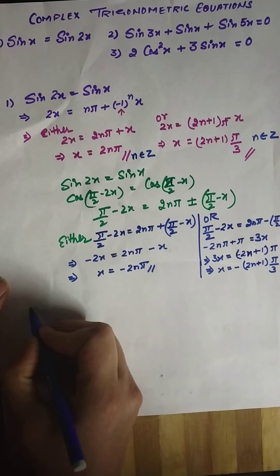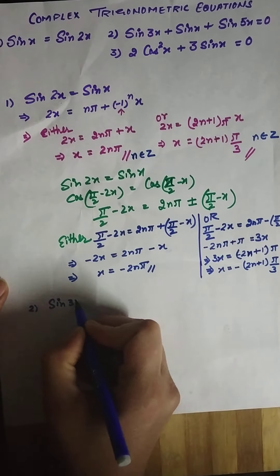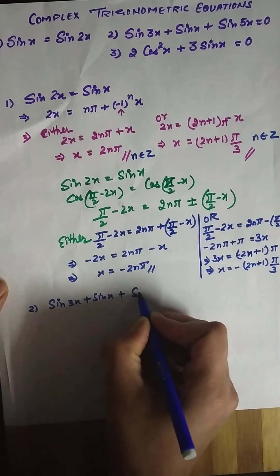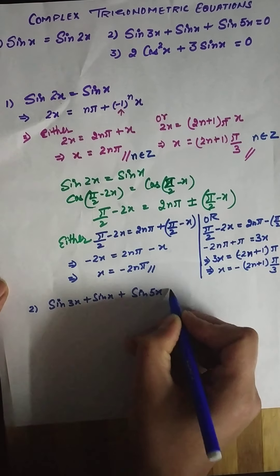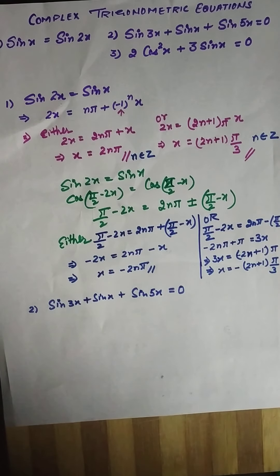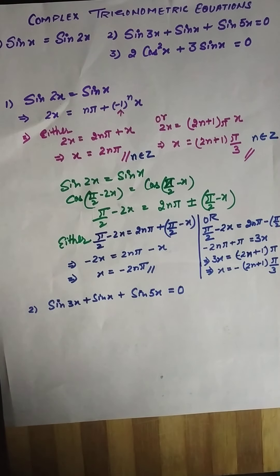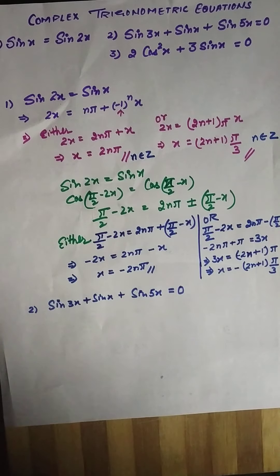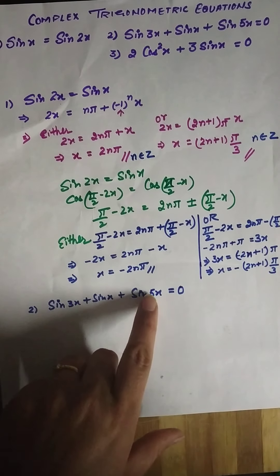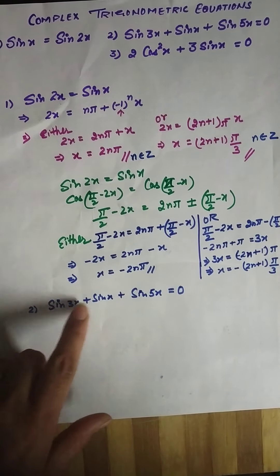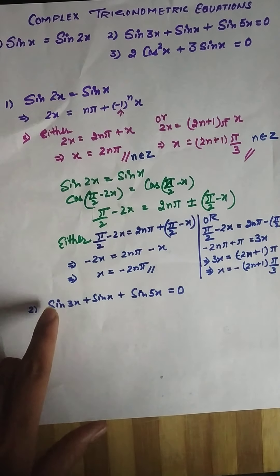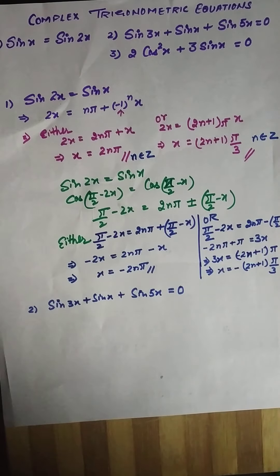Moving on to the next equation: sin 3x + sin x + sin 5x = 0. How do we deal with this? What strategy should we follow? The way out is through factorization. We cannot take sin common because it's not sin × 3x + sin × x — when it is not a product, we cannot factor it out that way.